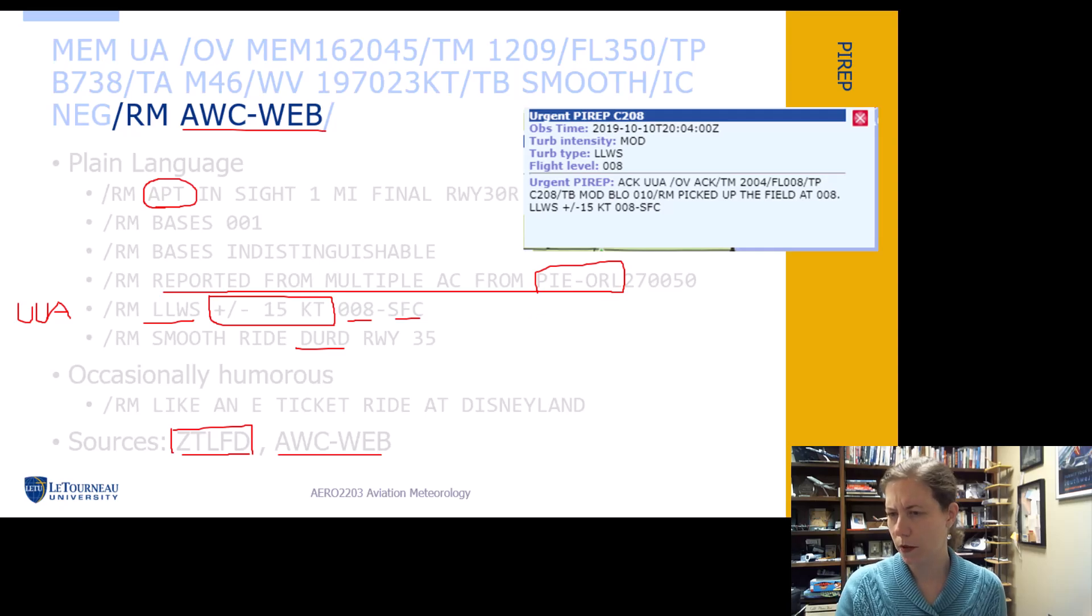Here's another example of a kind of a plain language report. It's actually that same low level wind shear part, but we also have picked up the field at 008. So we got in sight of the field at 800 feet MSL.